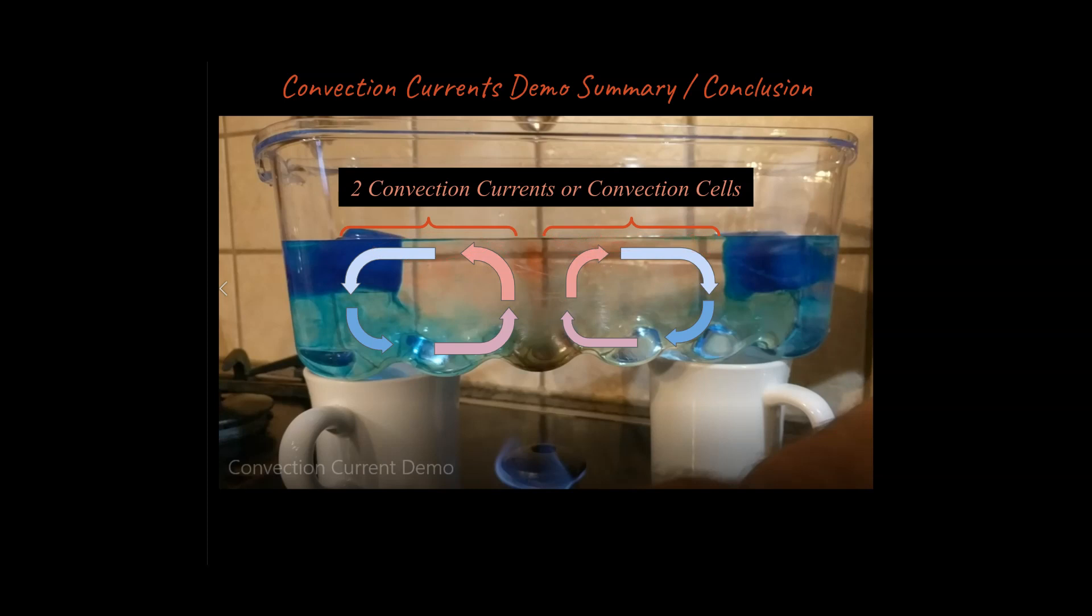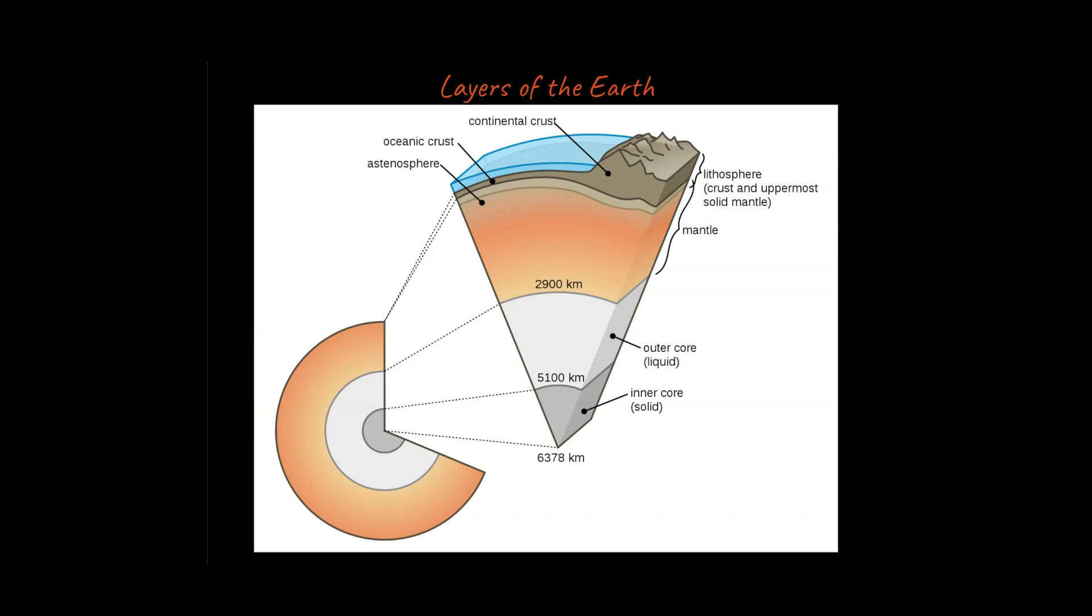Real quick: there are layers to the Earth. This outer core is liquid, inner core is solid. The pressure is tremendous as you go deeper, but it's also much hotter as well. As you get up here with the lithosphere—that's the crust and the uppermost part of the solid mantle—this makes up a tectonic plate.